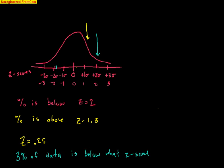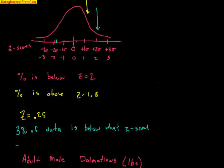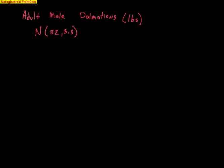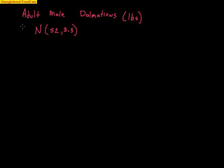These values can represent anything, and that's what I want to try to show you with this next example. So let's say that we know that adult male Dalmatians, which weigh in pounds, follow the normal model, and this is the notation we use. And this means that 52 is the mean, 3.3 is the standard deviation. So we have an average of 52 pounds, standard deviation of 3.3 pounds.